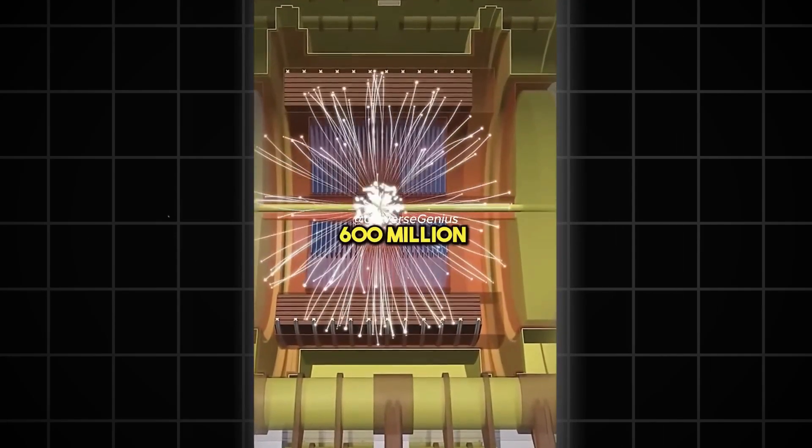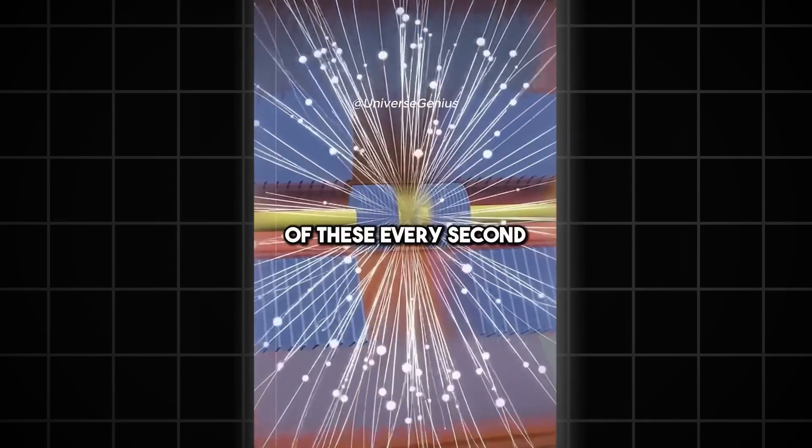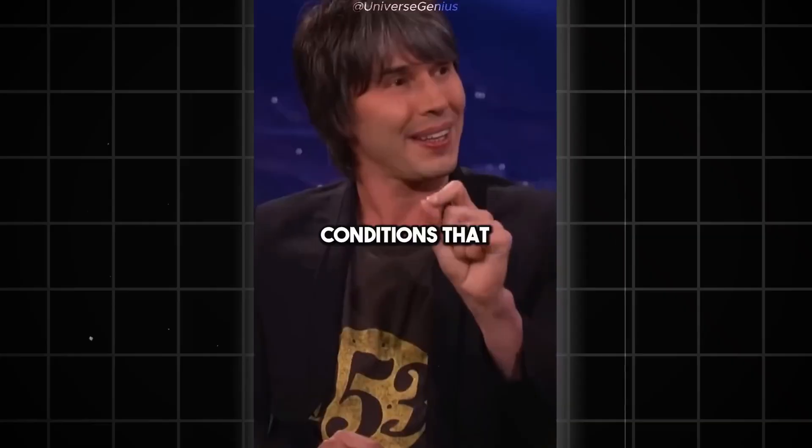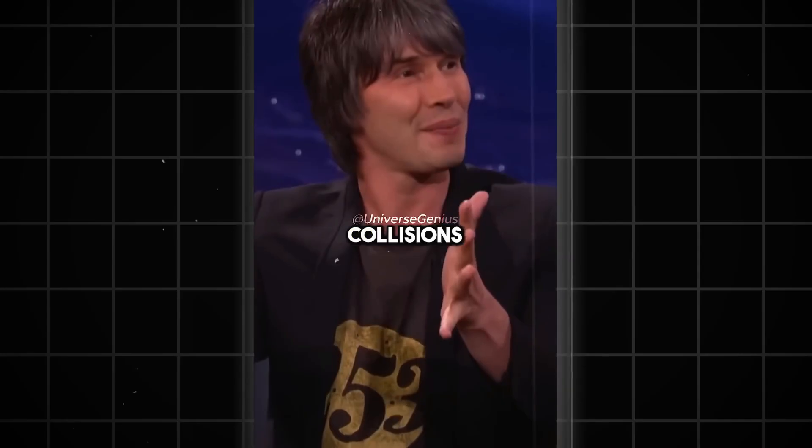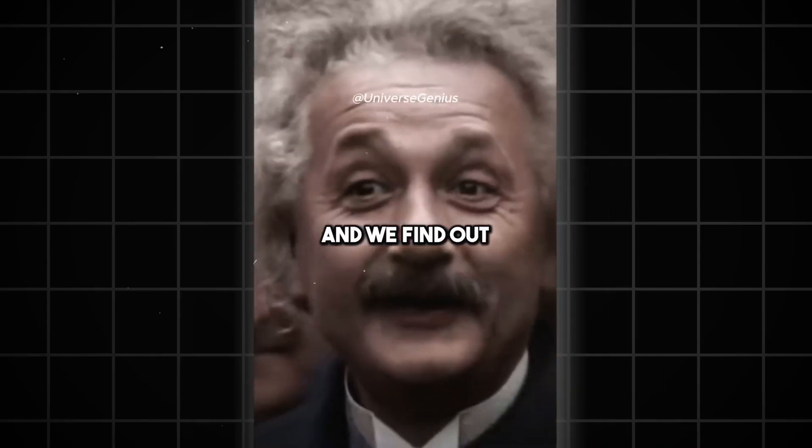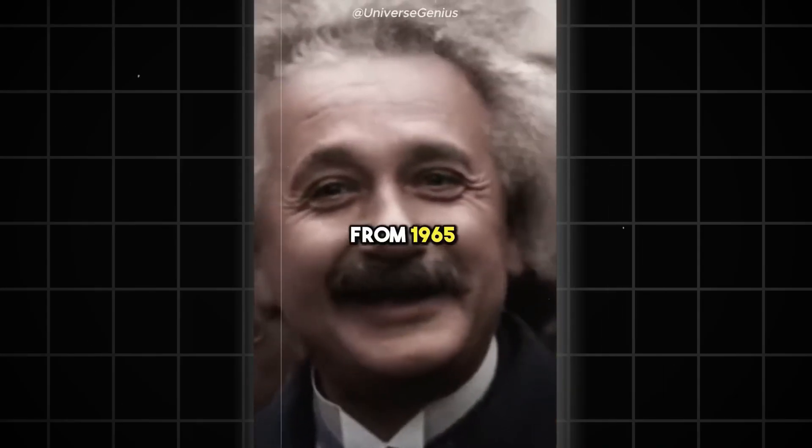On the other way, we collide together 600 million of these every second. In every collision, we create the conditions that were present less than a billionth of a second after the Big Bang. We take photographs of those 600 million collisions per second, and we find out this guy from 1965 was right.